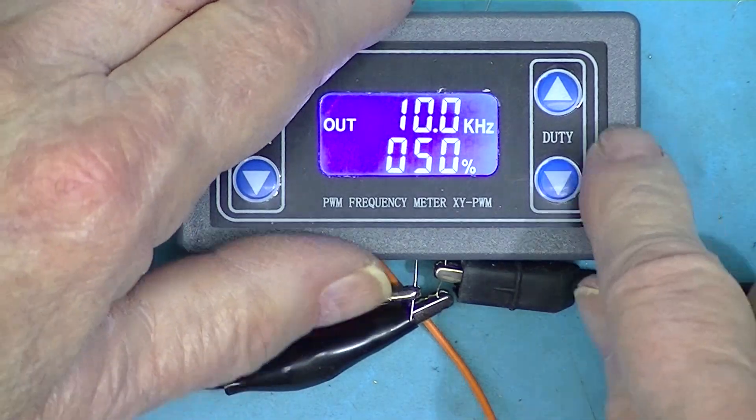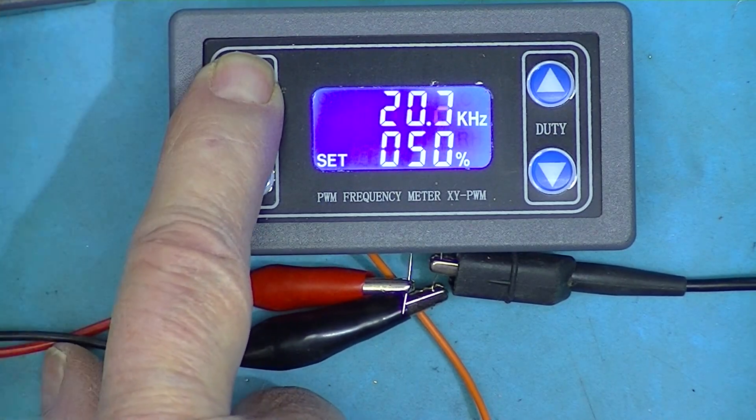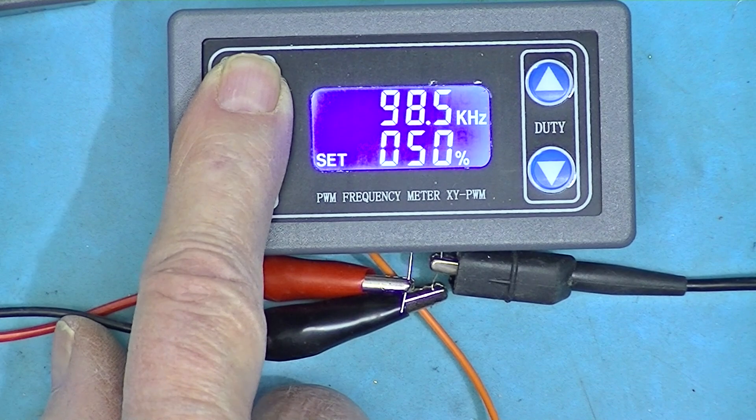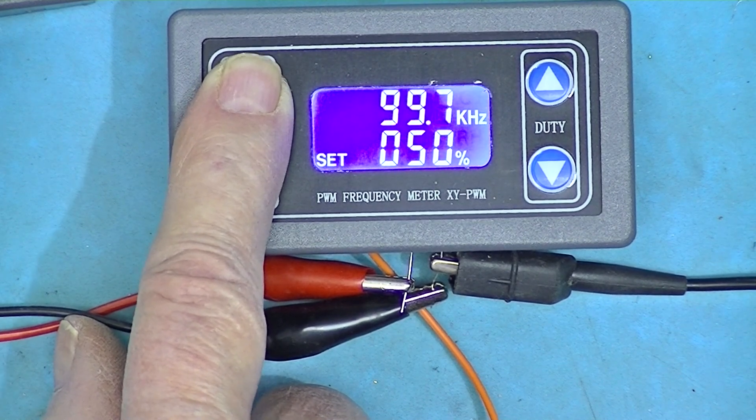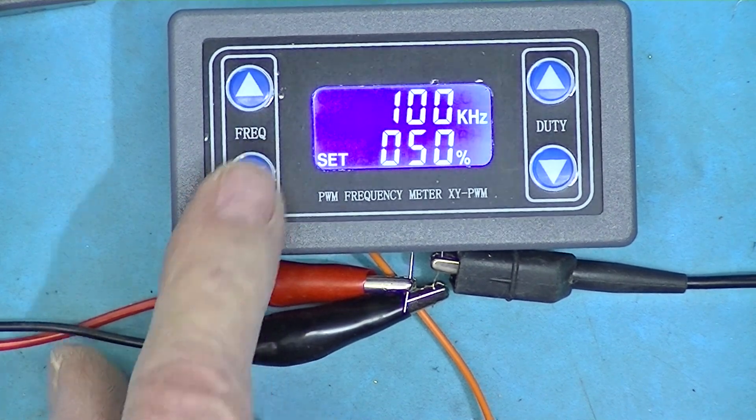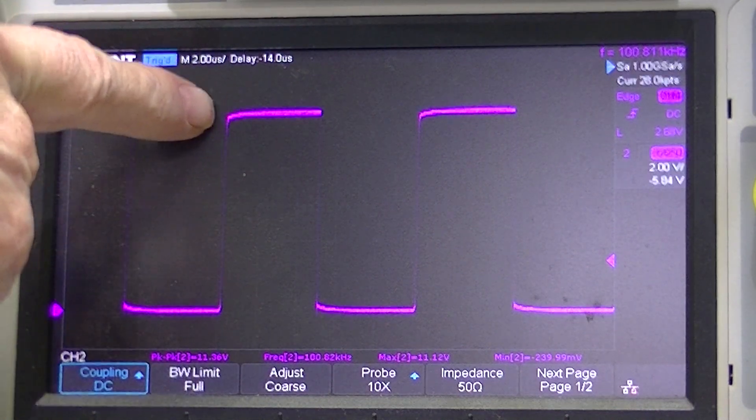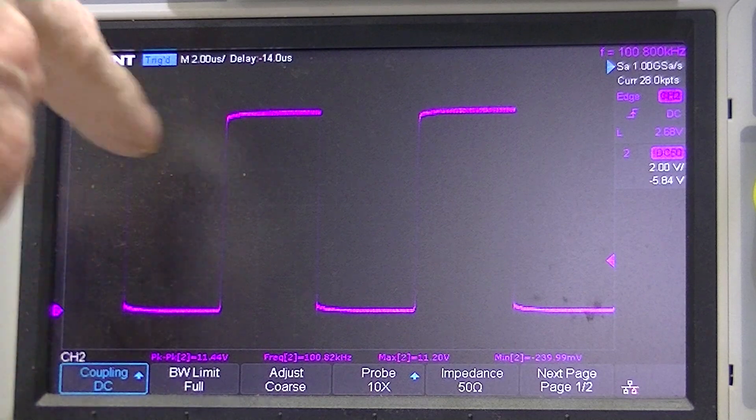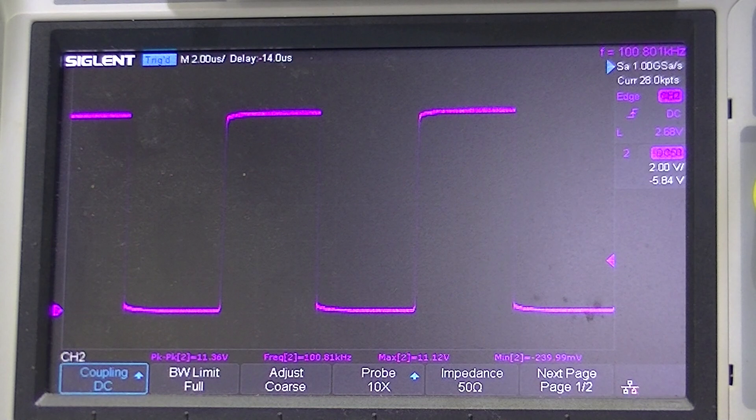I'll go to 100 kilohertz. I have 100 kilohertz and 50 percent duty cycle. We're getting slightly rounded edge here. Now the scope is DC-coupled. There's no load on the pulse generator. Probe's set on times 10.